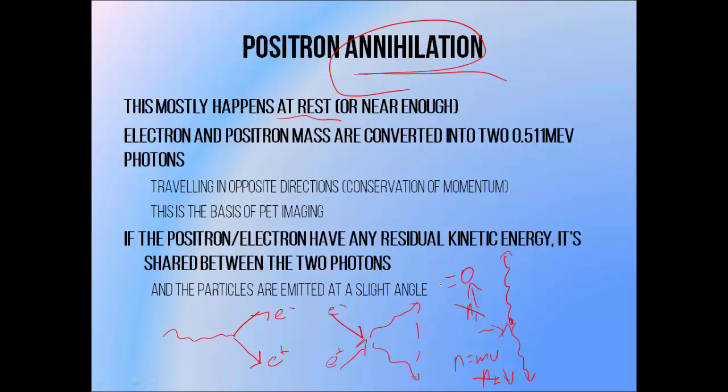So the mass of the electron-positron pair is converted into energy and shared equally between the two resulting photons. If the electron-positron pair are still moving when they are annihilated, they will have some residual kinetic energy which will be shared between the two photons, and the two photons will be emitted at a slight forward angle. The fact that positron annihilation photons are generally emitted in exactly opposite directions is the basis for PET imaging, which stands for positron emission tomography.